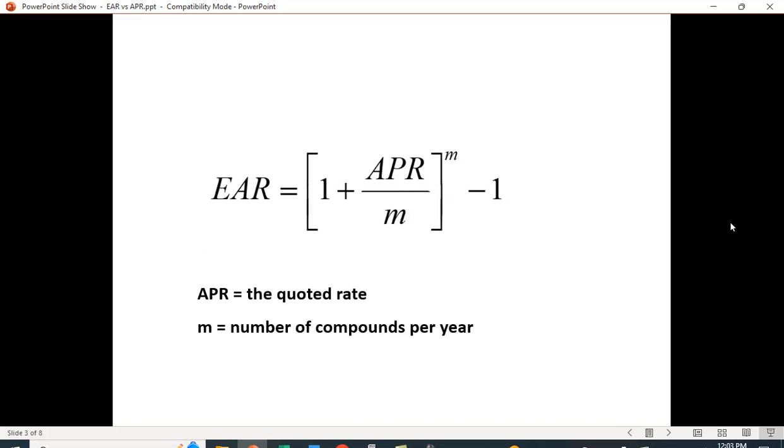So the formula is that the EAR is you take the APR, you divide it by the number of compounding periods, and the APR has to be in decimal form, so if it's 12%, it has to be 0.12. If it's monthly compounding, you divide it by 12, and then you'd raise it to the 12th power. Well, you'd add 1 to it and then raise it to the 12th power and then subtract 1.